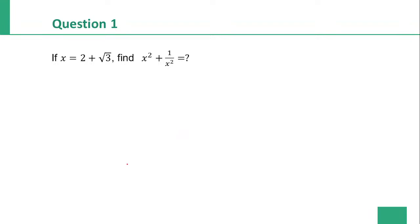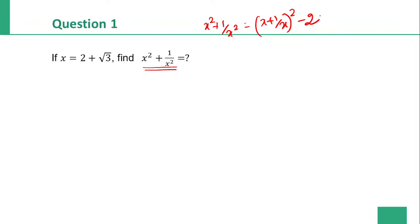x is equal to 2 plus root 3. Find the value of x square plus 1 by x square. It is x square plus 1 by x square. We proceed using x plus 1 by x, the whole square, minus 2. So I must first find x plus 1 by x.